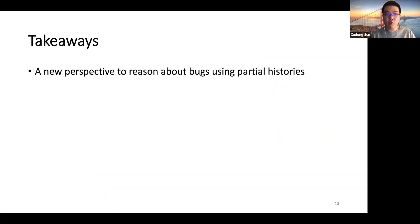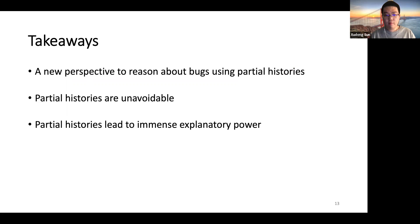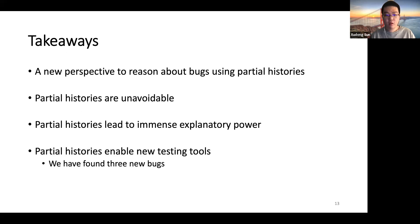To conclude, I present a new perspective of reasoning about bugs using partial histories. Partial histories are unavoidable, and they lead to advanced explanatory power that can reason about bugs cleanly. Partial histories also enable new testing tools. We have found three new bugs in this way, and there are still many challenges to solve. That's all for the presentation. Thanks for your attention.